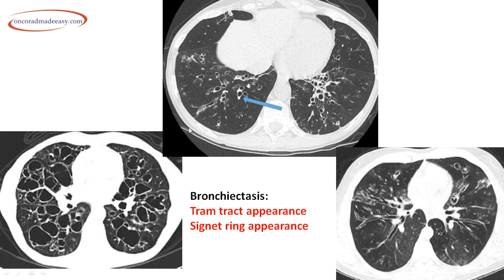In bronchiectasis — dilatation of bronchi with thickening of the walls — it can be cystic, cylindrical, or fusiform. CT images show cystic bronchiectasis as dilated spaces with thick walls. The two signs are: signet ring appearance, due to a dilated bronchus accompanied by a pulmonary vessel; and tram tract appearance, due to a dilated bronchus with thick walls giving parallel lines.